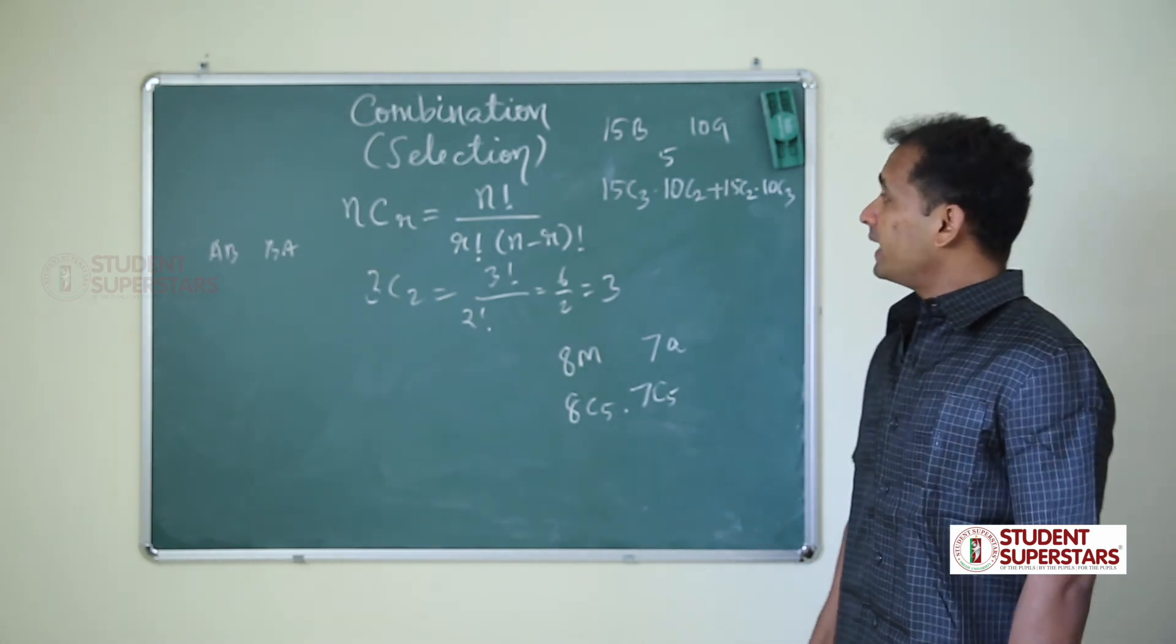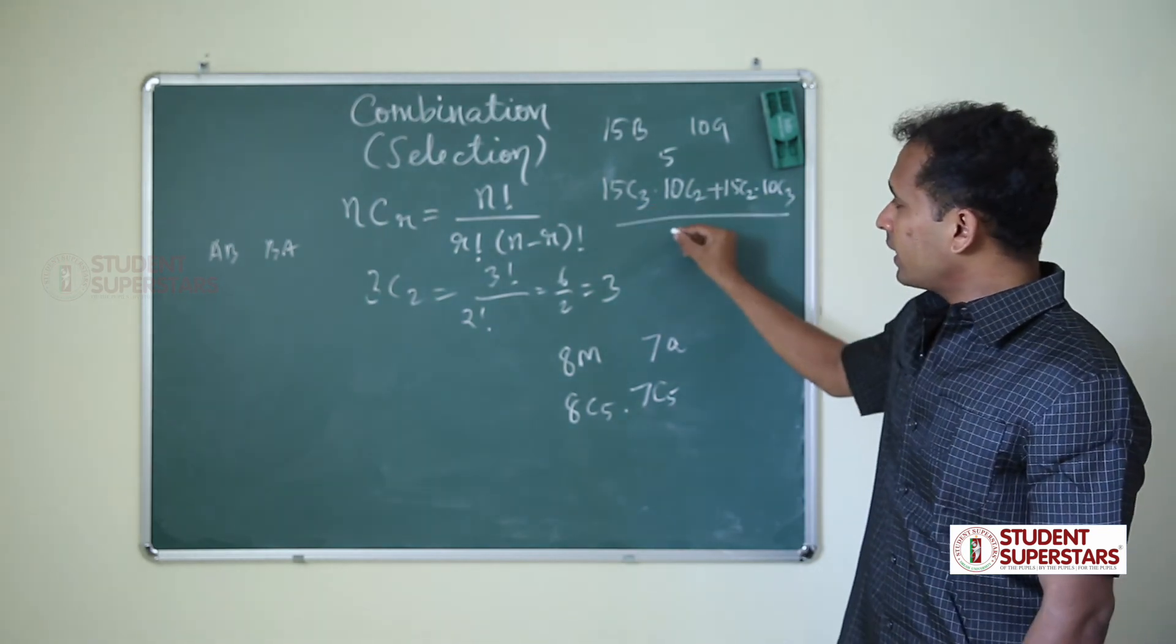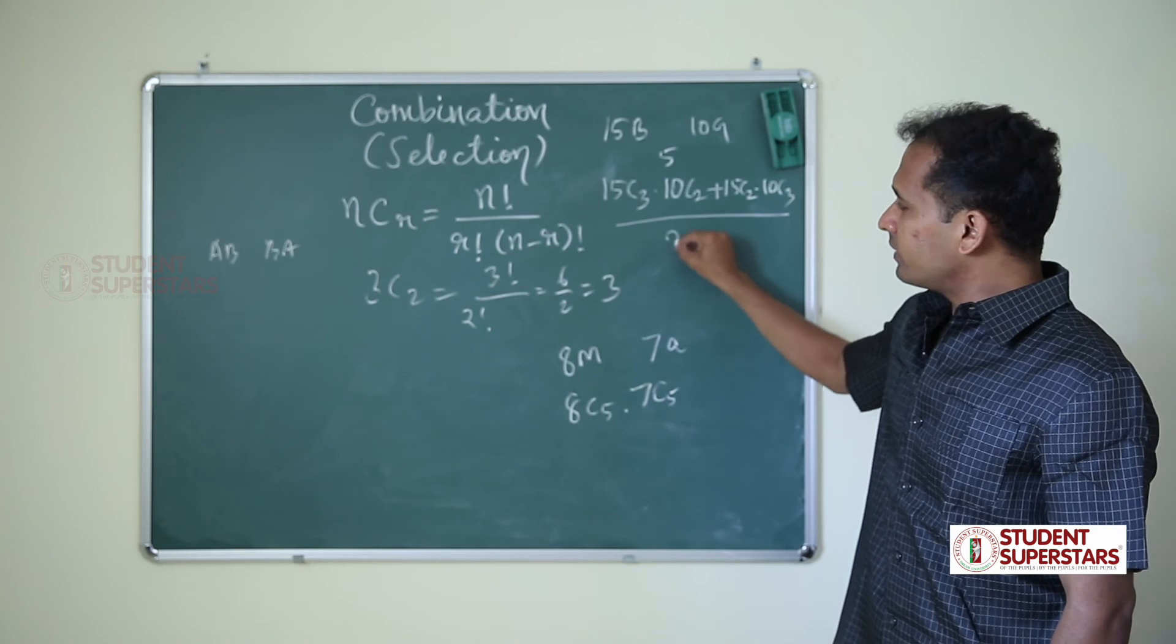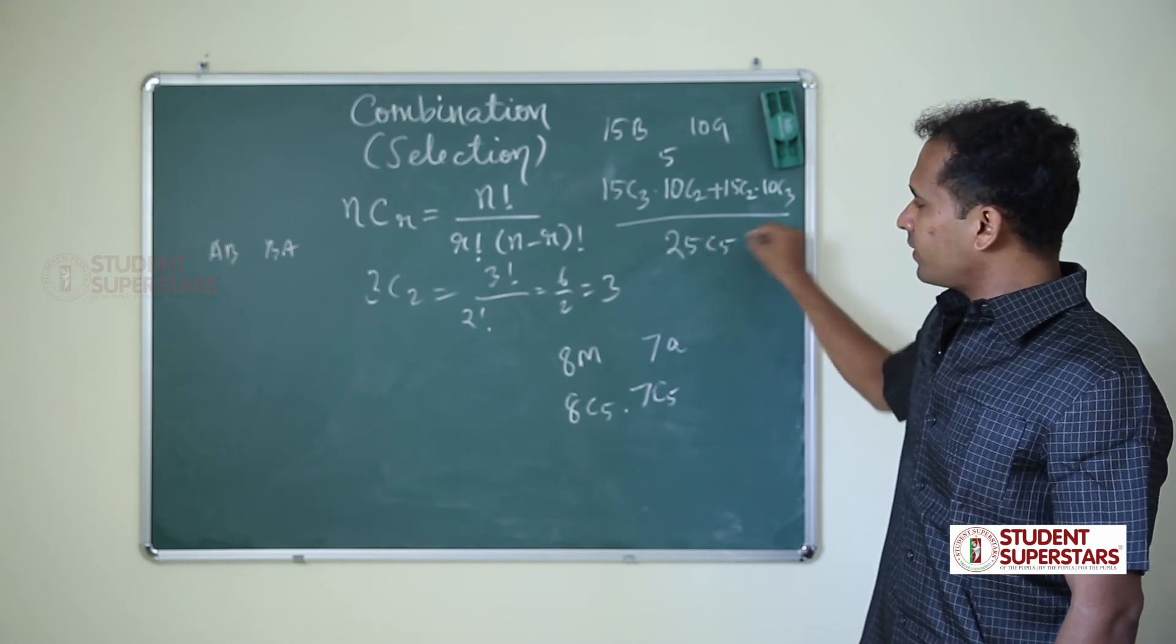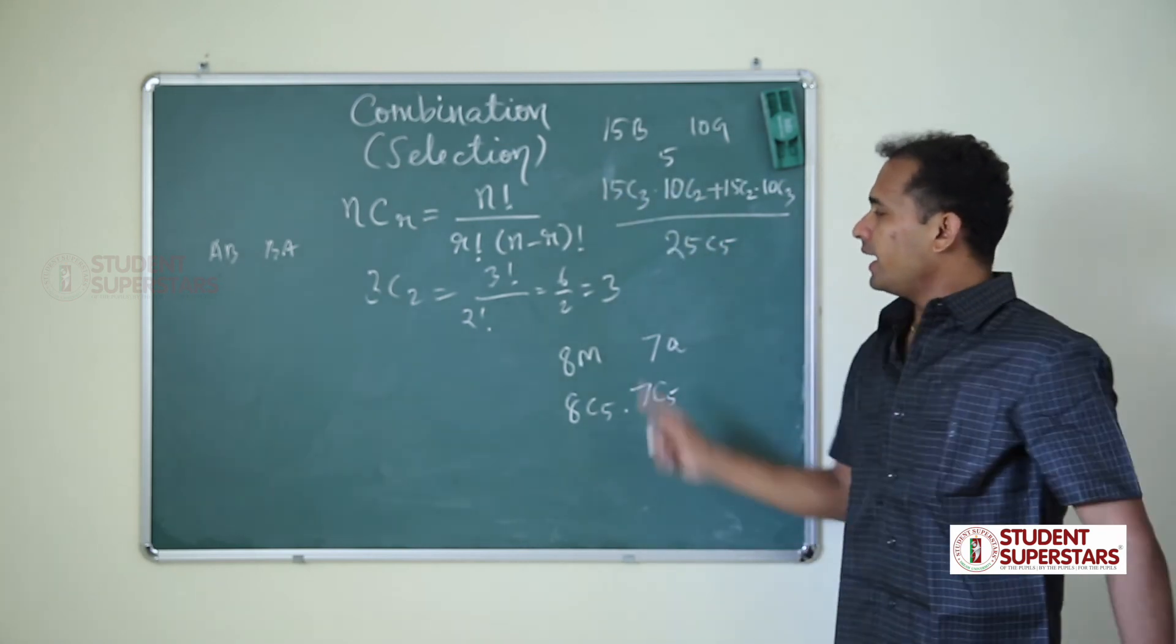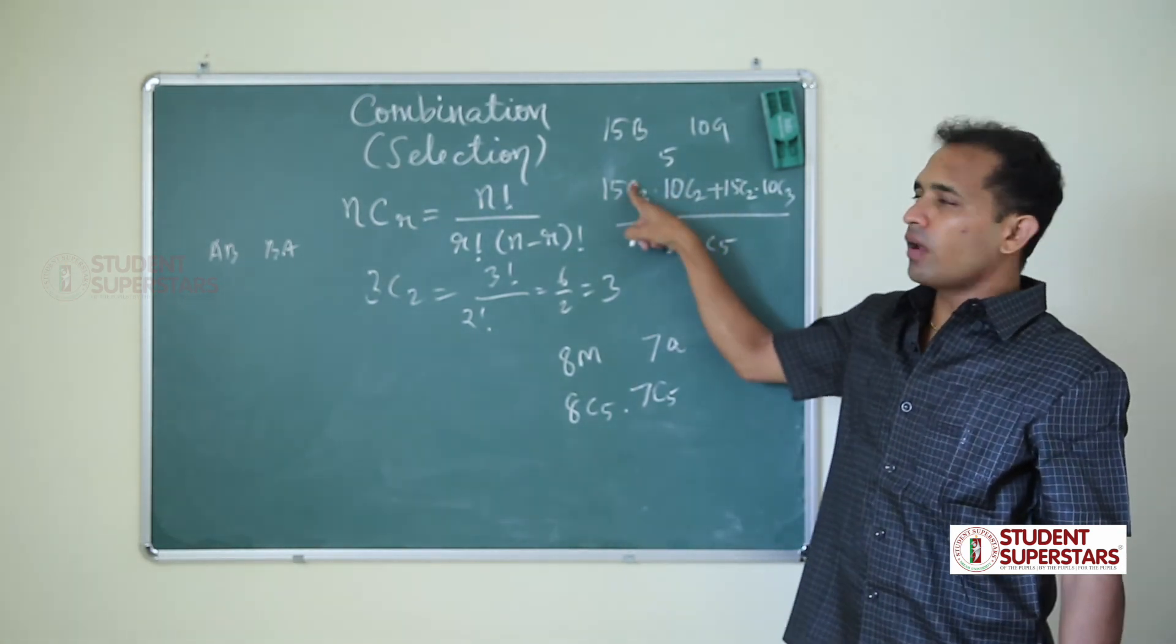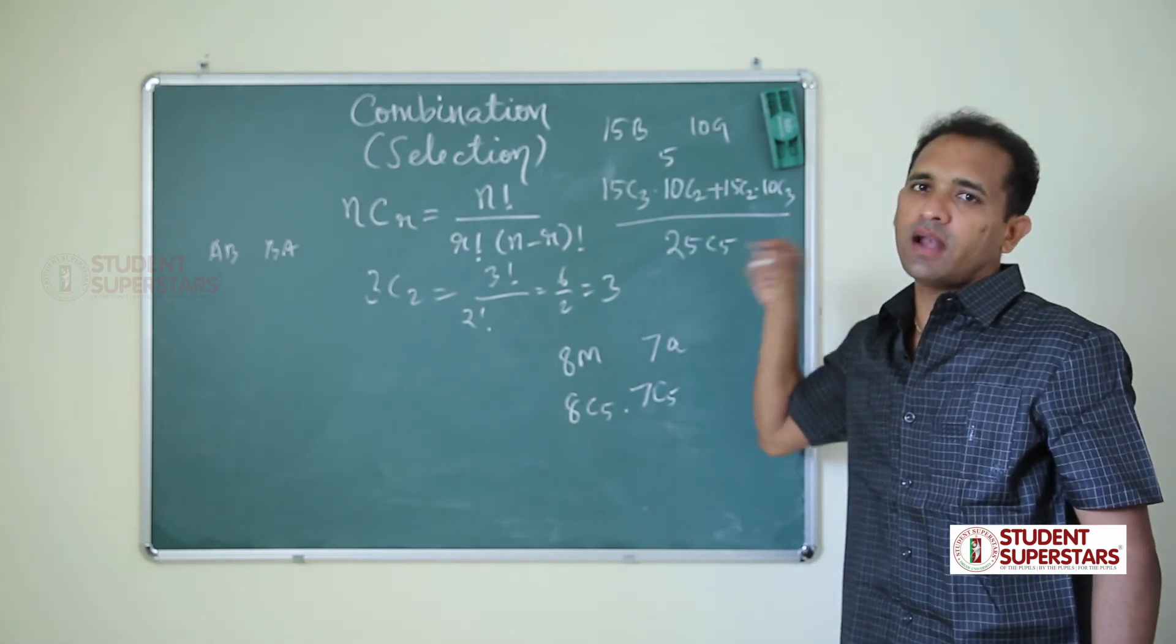So if we divide this whole value by number of events, that is probability: 25C5. You got the difference? This is combination, and divided by 25C5 is probability. Number of events by number of samples - that is probability.